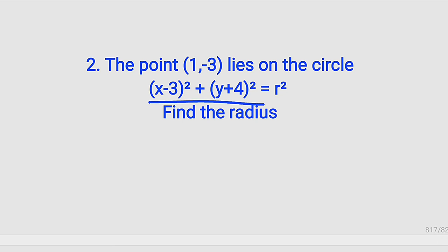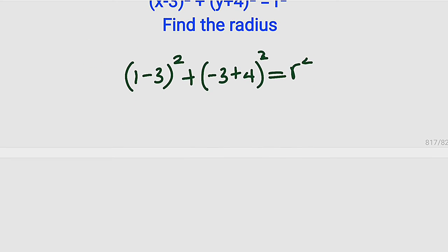Alright, so let's substitute into this equation. We have x for 1, minus 3, all squared, plus y which is -3, plus 4, all squared. This equals r². 1-3 here is -2, and (-2)² is 4. Then -3+4 is positive 1. All squared is also 1, and this equals r².